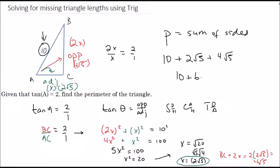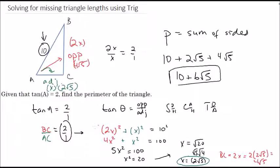That gives us 10 + 6√5. It's important for these questions to use all the information given and to remember that ratios don't necessarily mean the sides are exactly 2 and 1 — they just have to be in a ratio of 2 to 1. Anytime we have a ratio like that, we can use 2x and x, then apply other information like the Pythagorean theorem to solve for the missing sides.